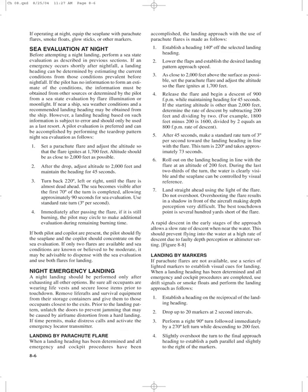Release the flare and begin a descent of 900 fpm while maintaining heading for 45 seconds. If the starting altitude is other than 2,000 feet, determine the rate of descent by subtracting 200 feet and dividing by 2; for example, 1,800 feet minus 200 is 1,600, divided by 2 equals 800 fpm. After 45 seconds, make a standard rate turn of 3 degrees per second toward the landing heading in line with the flare; this turn is 220 degrees and takes approximately 73 seconds. Roll out on the landing heading in line with the flare at an altitude of 200 feet. During the last two-thirds of the turn, the water is clearly visible and the seaplane can be controlled by visual reference. Land straight ahead using the light of the flare — do not overshoot. Overshooting the flare results in a shadow in front of the aircraft making depth perception very difficult. The best touchdown point is several hundred yards short of the flare. A rapid descent in the early stages of the approach allows a slow rate of descent when near the water, preventing flying into the water at a high rate of descent due to faulty depth perception or altimeter setting.